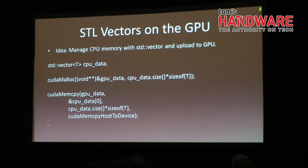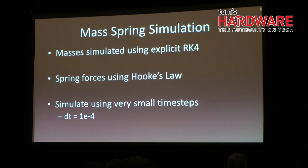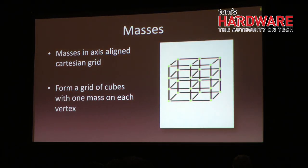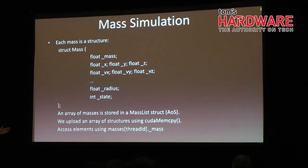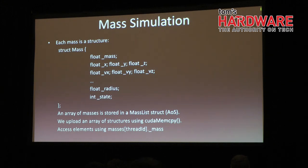We do this by pointing to the first data element of the CPU array. A note about the simulation: the masses are simulated using explicit RK4, and spring forces are computed using Hooke's law. We simulate using very small time steps to get around the need to do an implicit simulation, which is much more complex. The masses are structured in an axis-aligned grid and form a grid of cubes where one mass is at each vertex. This is the actual structure used in the simulation, and you'll notice that it looks exactly like a C struct. On the GPU, you can still access all the fields of this data structure as if you were calling C++ code. This arrangement is called an array of structures, because the STL vector contains a sequence of instances of this particular struct.